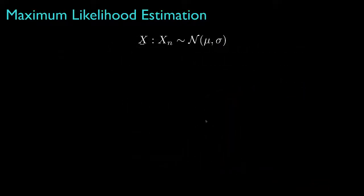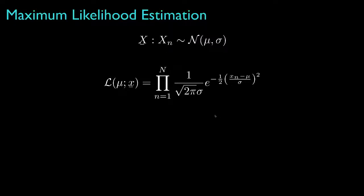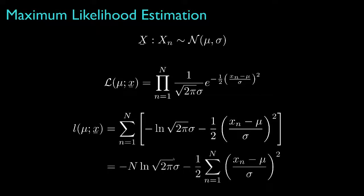As an example, let's consider a situation where the elements of the observation vector are independent, identically distributed random variables, each with a normal or Gaussian distribution with an unknown mean, mu, and a known standard deviation, sigma. The goal is to estimate the unknown mean, mu. Based on this statistical model, the likelihood is the product of the individual densities for each element of the observation vector, evaluated for each of the observed values. The log likelihood is the logarithm of the likelihood, which converts the product to a sum and can be simplified as shown.